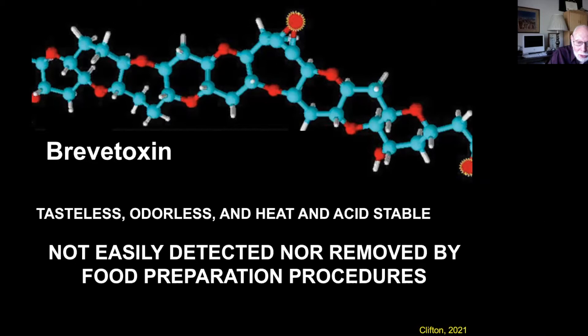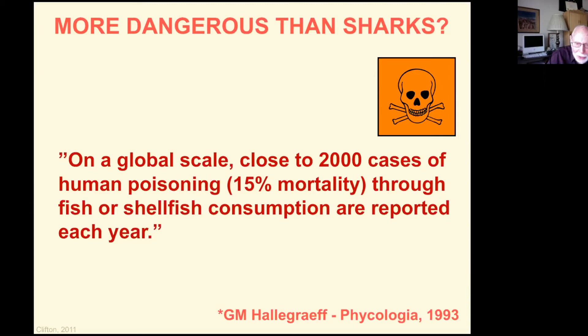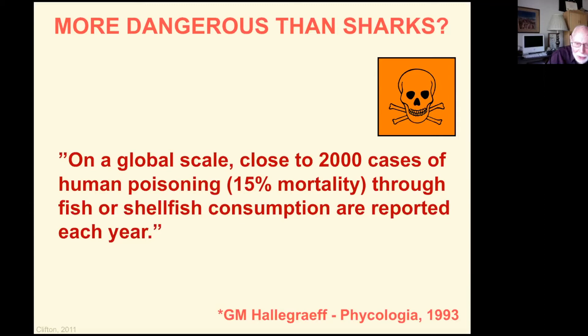The effects can be devastating. In 1987 in the village of Champerico, Guatemala, 187 people came down with these symptoms and 26 of them died. Are dinoflagellates more dangerous than sharks? A book published in 1993 said that on a global scale, close to 2,000 cases of human poisoning through fish or shellfish consumption are reported each year with a 15% mortality — that's 300 deaths, compared to four to six deaths per year on average from shark attacks. Dinoflagellates are clearly more dangerous than sharks.